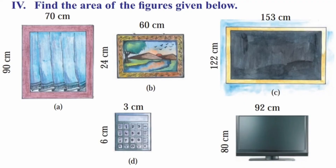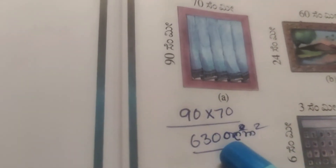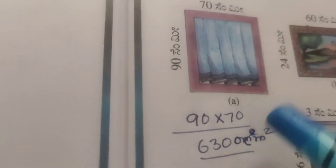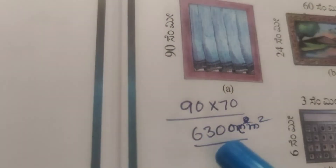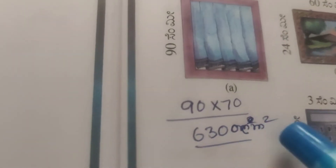Fourth: find the area of the figures given below. First question: length is 90 cm and breadth is 70 cm. Area is 90 into 70. 9 sevens are 63, giving 6,300 cm².